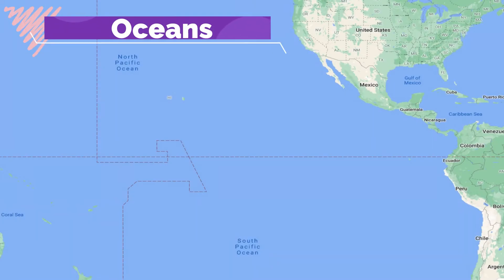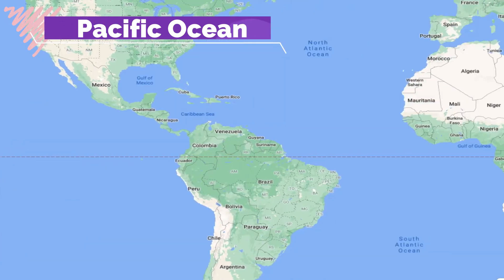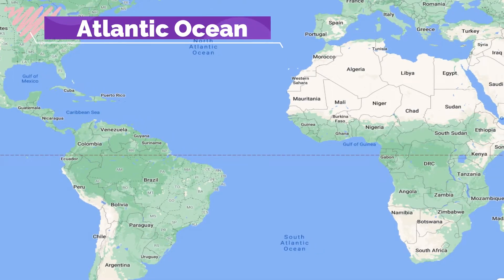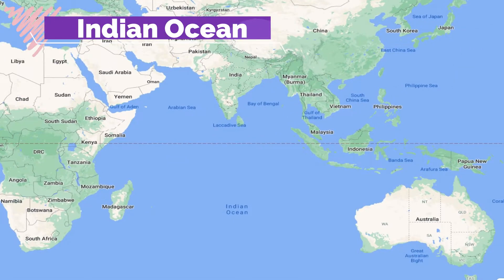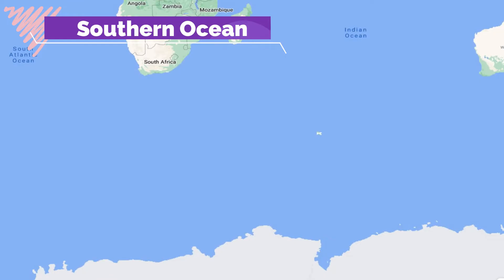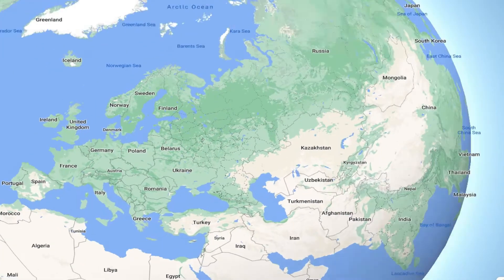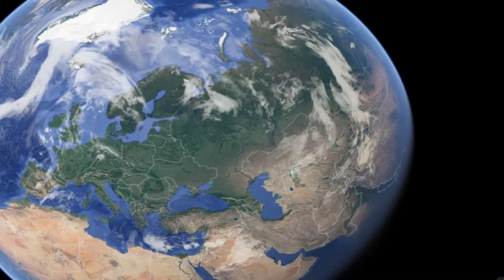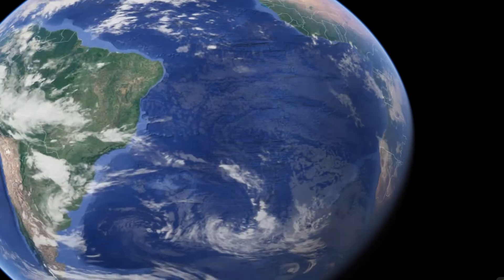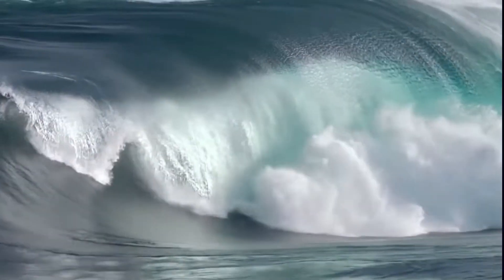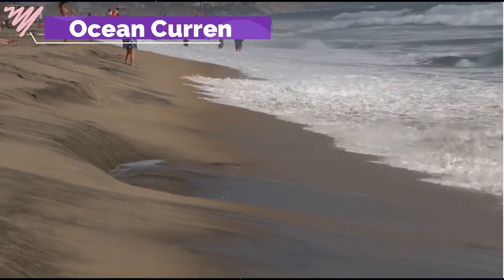Oceans. The five major oceans are the Pacific Ocean, the Atlantic Ocean, the Indian Ocean, the Southern Ocean and the Arctic Ocean. Oceans are the major part of the hydrosphere. All oceans are interconnected. The ocean water is always moving. The three chief movements of ocean water are the waves, the tides and the ocean currents.